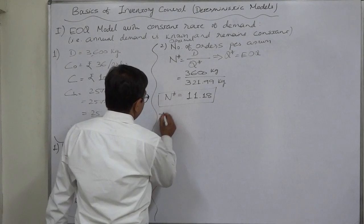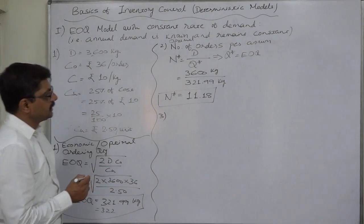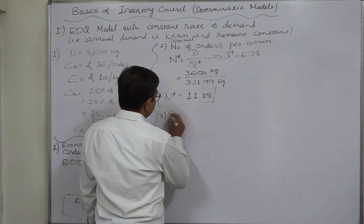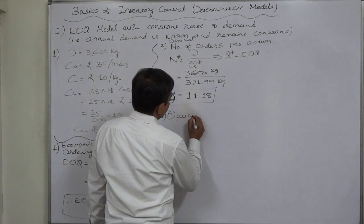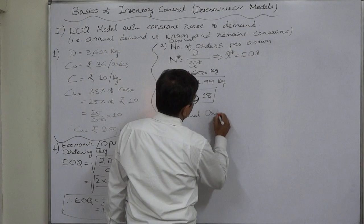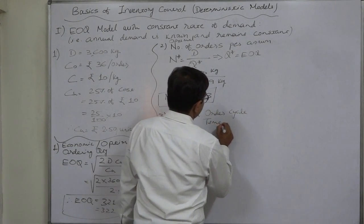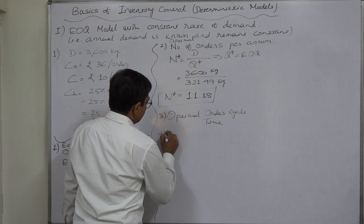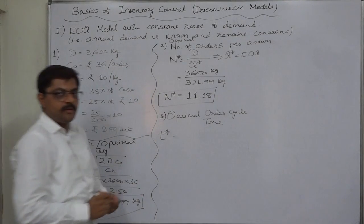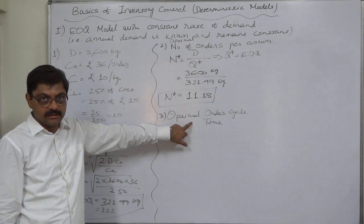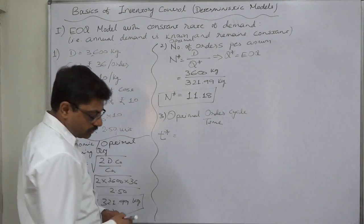Now, similarly, as a part of inventory policy, we can calculate optimal order cycle time. Optimal order cycle time. That is, P star. In simple words, this is the gap between two consecutive orders. This shows the gap between two consecutive orders.